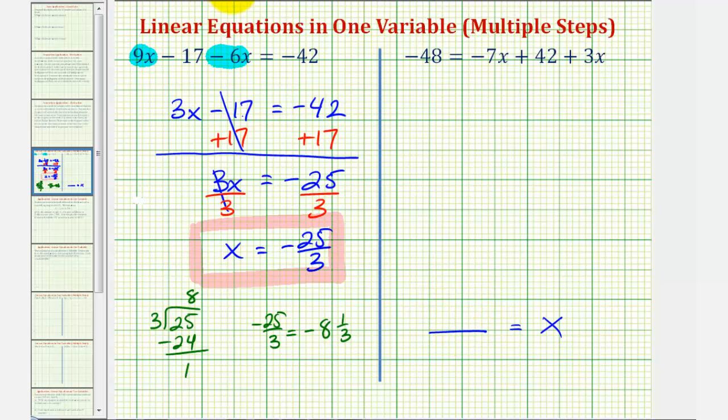The first step is to simplify either side. Notice how we have two like terms on the right side. We have negative seven x plus three x, which would give us negative four x. So now we have -48 = -4x + 42.